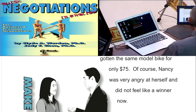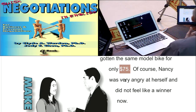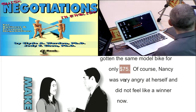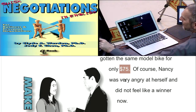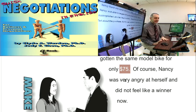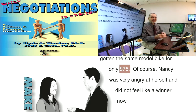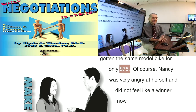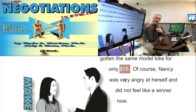Then her friend Ted tells Nancy that he bought that same model for $75. Nancy's like — what? I paid $100 and you got it for $75? I must be a loser. So in one moment Nancy was a winner, and now she's a loser. That seems odd — how is that possible? She still has the same bicycle, and she's going to use it for the same things. Nothing changed. What did change? Her goal — and specifically in this case, she has no goal.